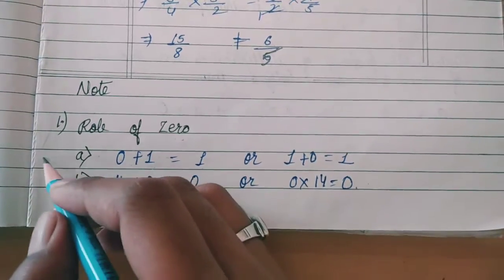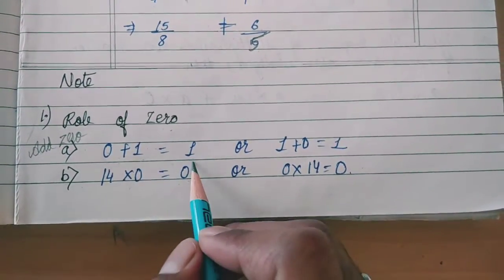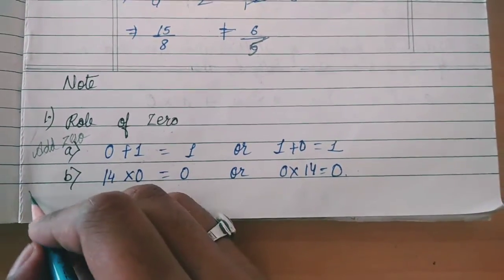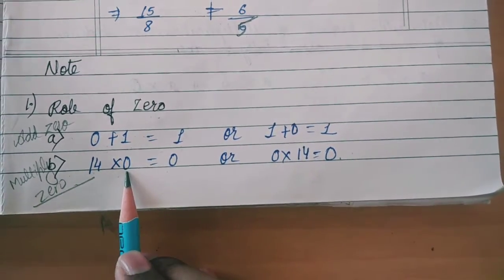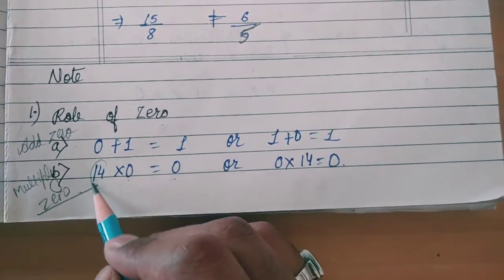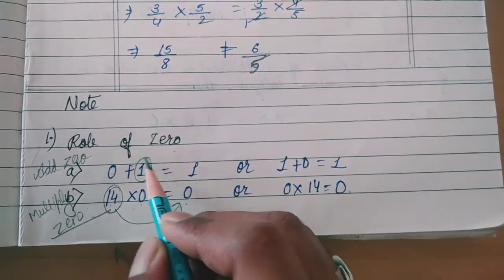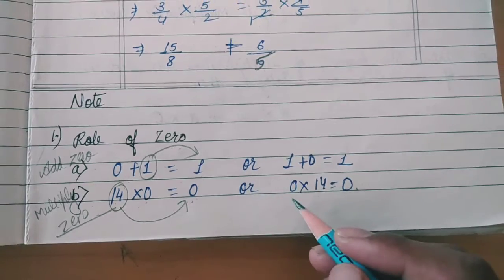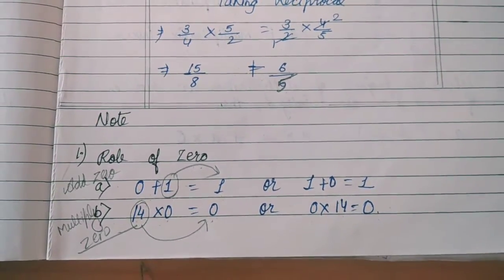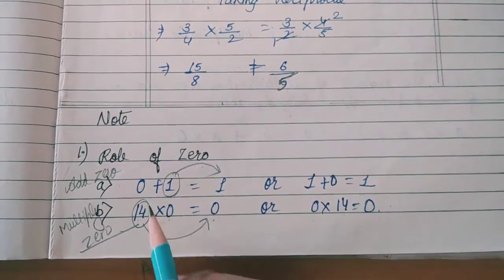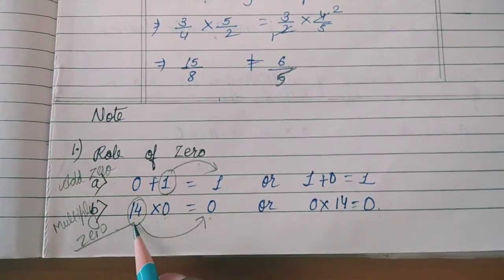Now we will see the role of 0. When we add 0, there is no change in the result: 0 plus 1 is 1, or 1 plus 0 is 1. But when we multiply by 0, the number changes to 0: 14 multiplied by 0 gives 0, and 0 multiplied by 14 also gives 0. So the role of 0 is: in addition the number remains same, and in multiplication the number becomes 0.